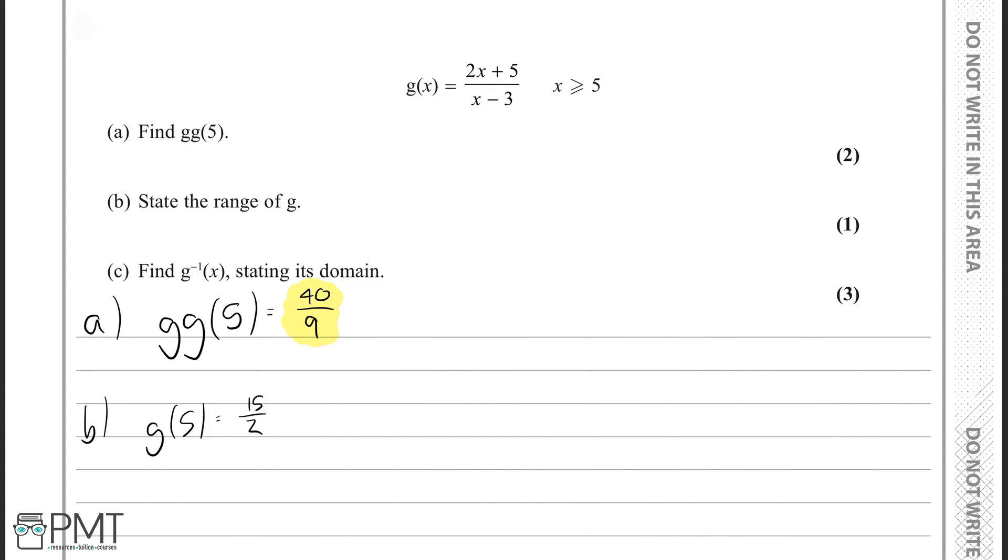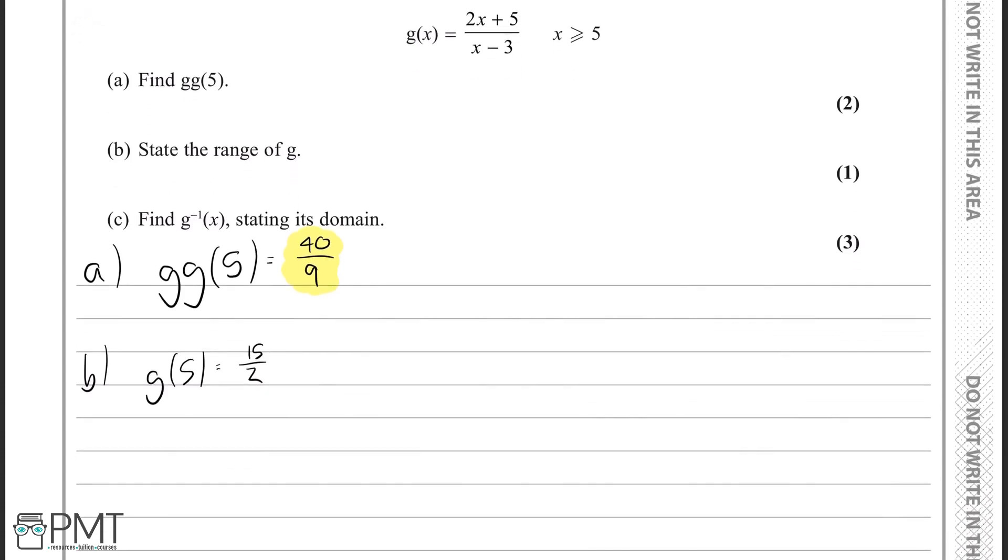Now, a way to investigate this is, let's see what happens to x as it gets very, very large. So if we take the limit as x approaches infinity of g of x, which is the same as the limit as x approaches infinity of 2x plus 5 over x minus 3.